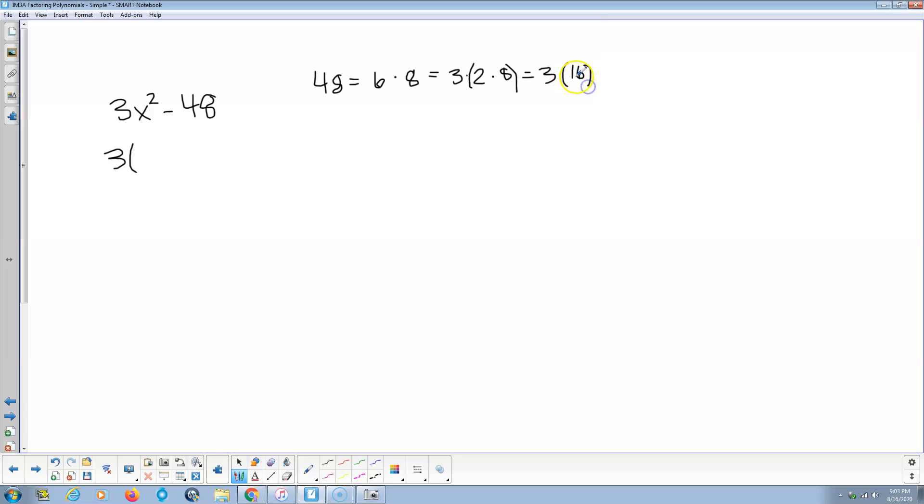48 is divisible by 3, 16 times. So 3 times x squared minus 16. Multiply back - 3 times x squared is 3x squared, 3 times negative 16 is negative 48. With a binomial, I'm looking for difference of squares. Perfect square minus perfect square, so this is 3 times x plus 4 times x minus 4. You might think this is a difference of squares, but no - x is not squared, x is to the first power. This is prime. We're done. Bam.